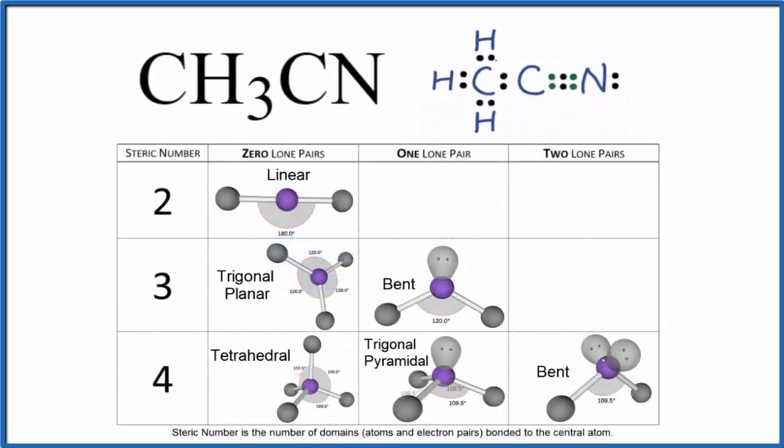To recap, we looked at the molecular geometry for each of these carbons. We found that this carbon had a linear molecular geometry, and this carbon right here, tetrahedral.